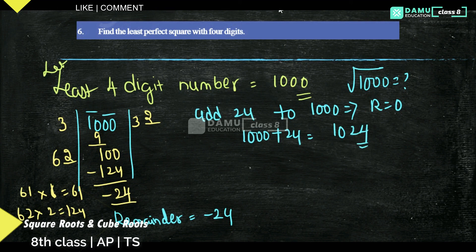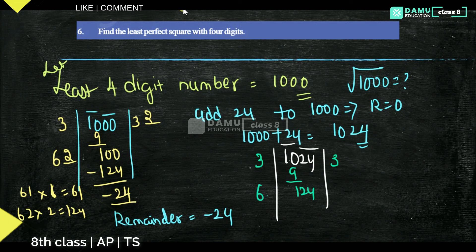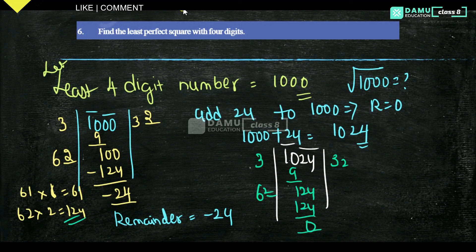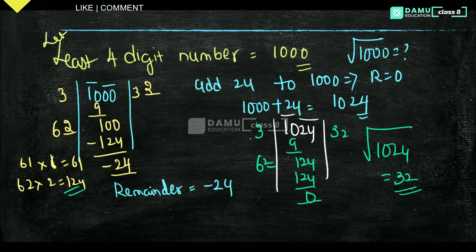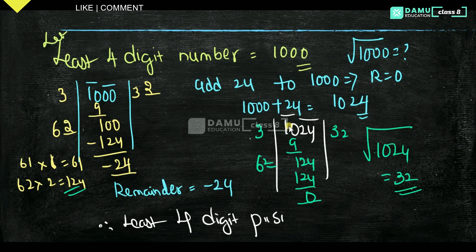So 1000 + 24 = 1024. Now we check whether 1024 is a perfect square. Grouping 1024 as 10 and 24: 3² = 9 below 10, quotient starts with 3, remainder = 1, bring down 24 giving 124. Then 32 × 2 = 64, and 62 × 2 = 124. So 62 × 2 = 124, remainder = 0. Therefore, √1024 = 32, and the least 4-digit perfect square number is 1024.